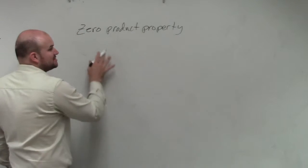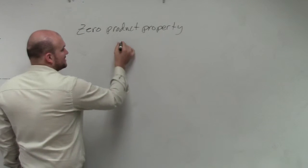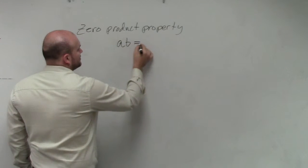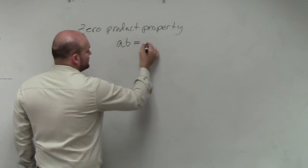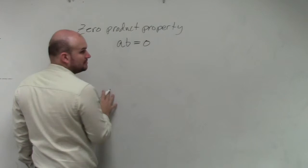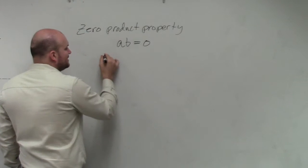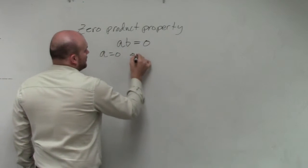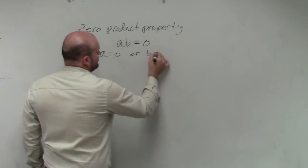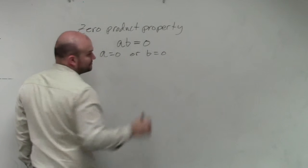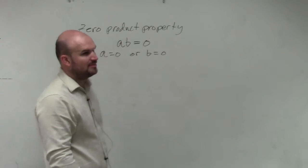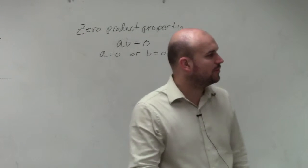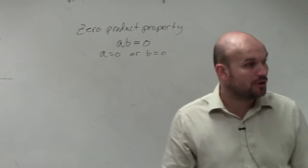So basically the zero product property states like this: if you have two terms set equal to zero, then a equals zero or b equals zero. Remember, 'or' is inclusive, meaning it could be one or the other or both.